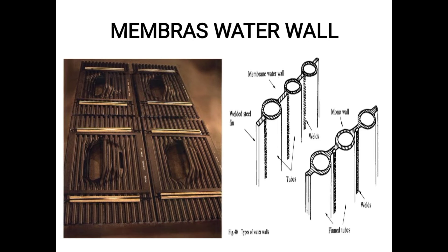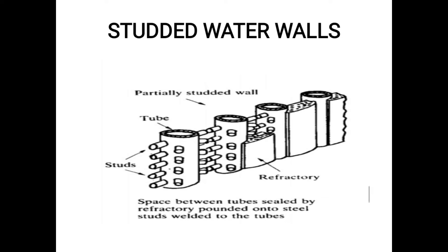Next is the studded water wall. Studded water walls are similar to the previous types but with an addition — there are studs on the surface of the tubes, as seen in the sketch showing a number of studs around the circular area of the tubes.